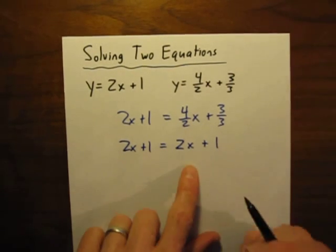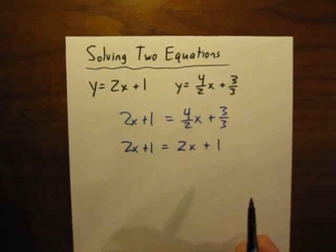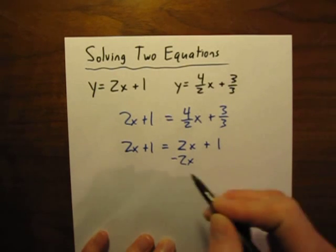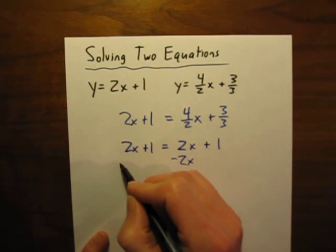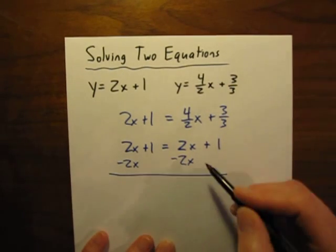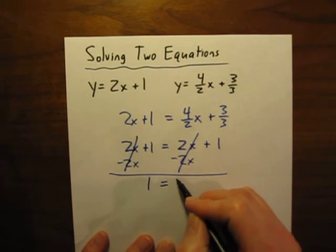We want to get the letters on one side, the numbers on the other side. So, let's get rid of this 2x. Move it over here. Minus 2x. And whatever we do to one side, we need to do the other side. Minus 2x. The two x's cancel. Leave me with 1 equals 1.